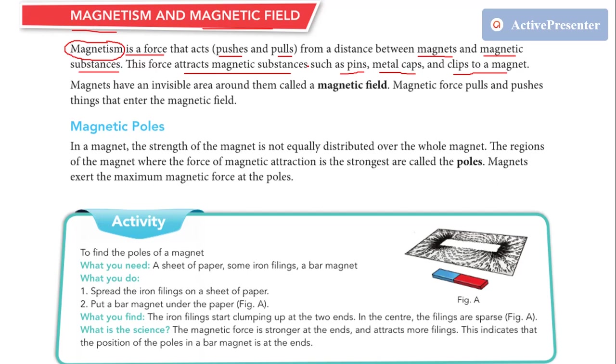These magnetic substances are mostly made up of iron, nickel, and cobalt that we have seen in our last video. So magnetism is a force which acts between magnet and magnetic substances.